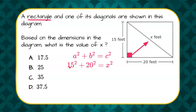So now the first step is to do 15 squared which is 225 and 20 squared which is 400. Now we're going to add 225 and 400 which is 625.